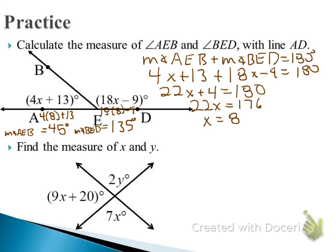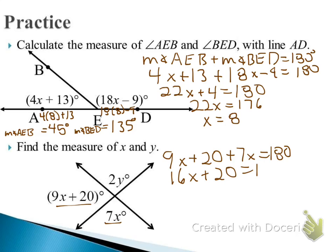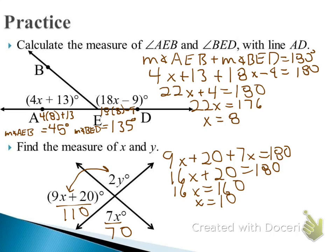For the next problem, using the supplementary relationship first to find X: 9X + 20 + 7X = 180. Combining gives 16X + 20 = 180, then 16X = 160, so X = 10. Plugging back in, one angle is 70 degrees and the other is 110 degrees. Using those results, 110 + 2Y = 180, so 2Y = 70, and Y = 35 degrees.